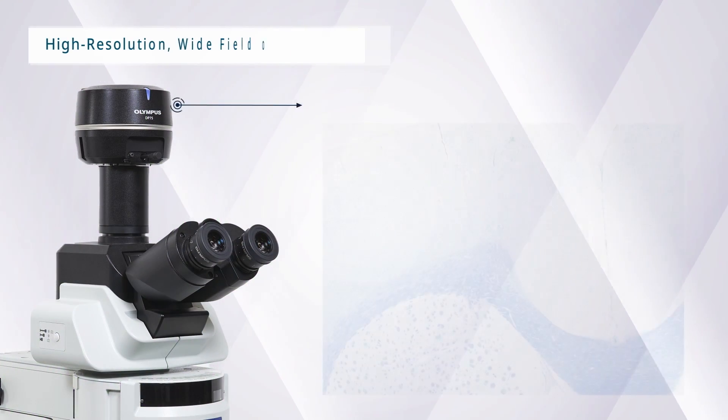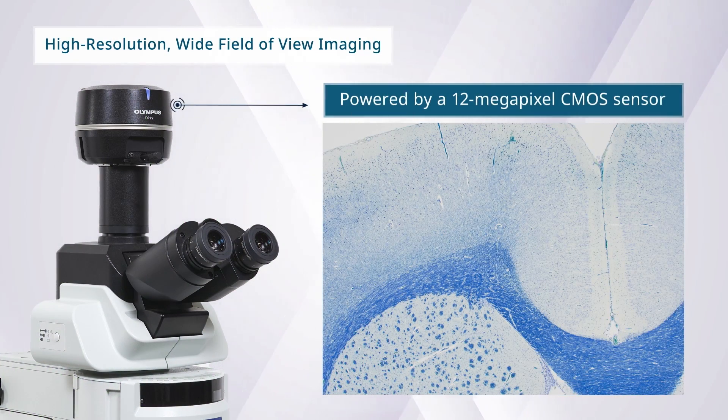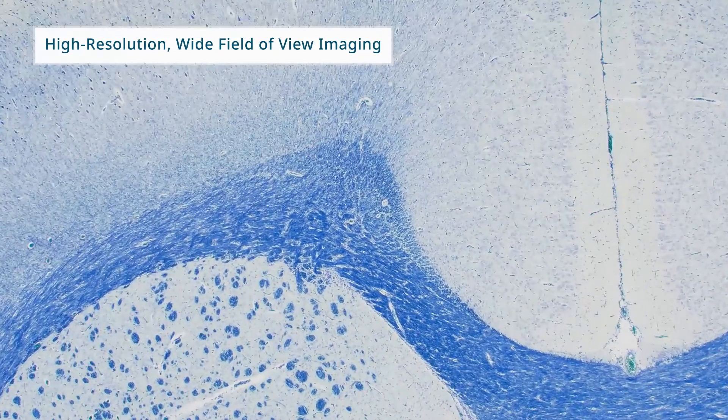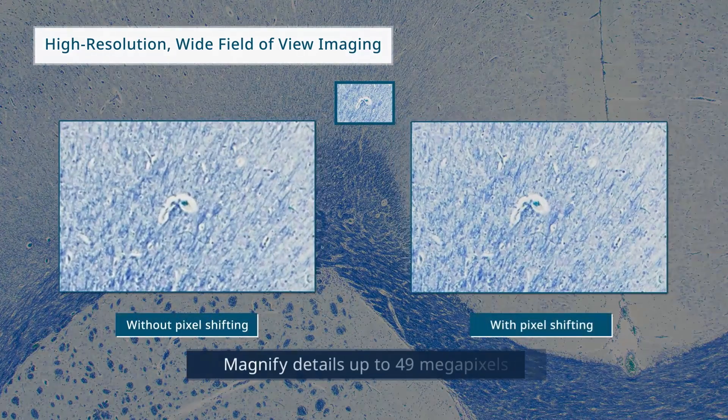Powered by a 12-megapixel CMOS sensor, the camera can magnify details up to an incredible 49 megapixels using a pixel-shifting technique.